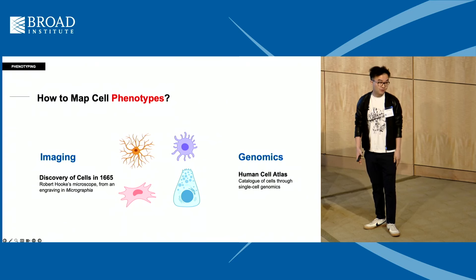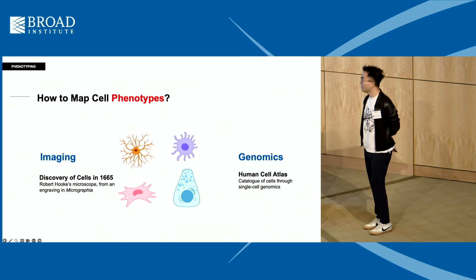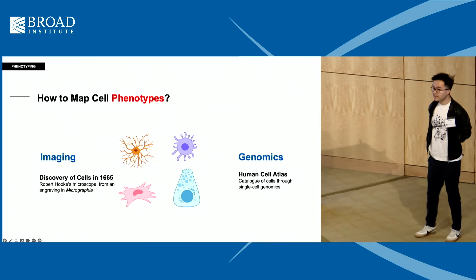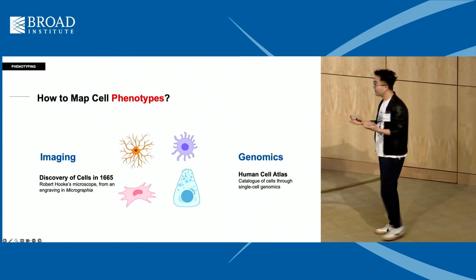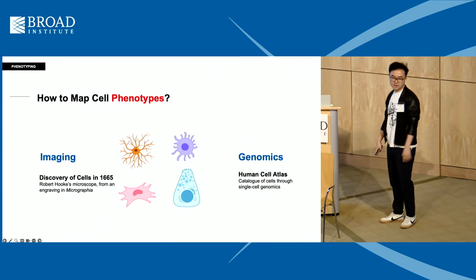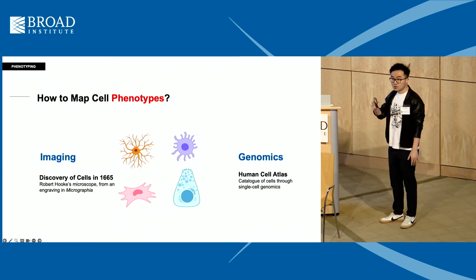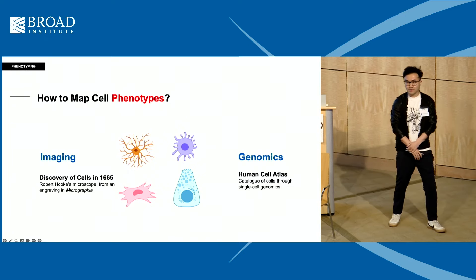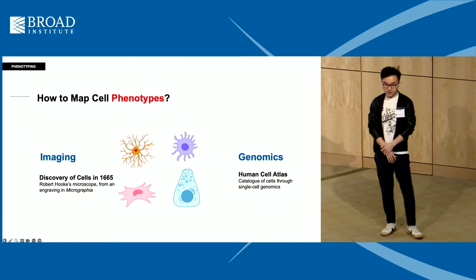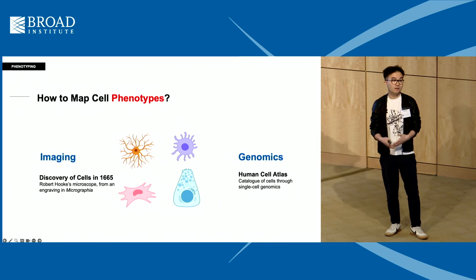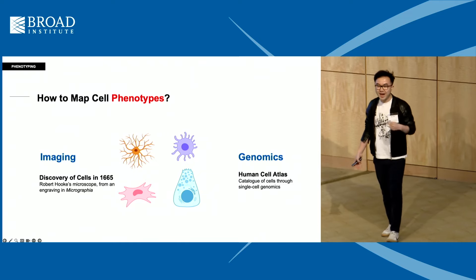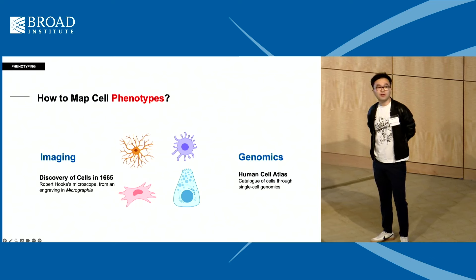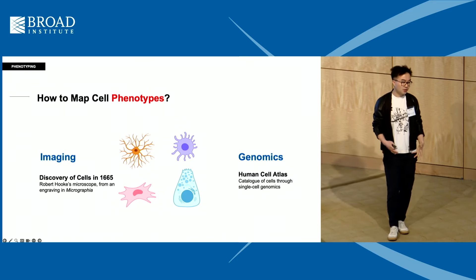Cells were originally discovered and defined through microscopy by Robert Hooke in 1665. Single-cell sequencing is super cool but still very expensive, and a fundamental limitation is that it's destructive—once you sequence the cells, you won't have the same cells again. You can't do this in vivo or in humans; I can't imagine getting single-cell RNA-seq from the brain every day. That's why we started thinking about imaging as a complementary measurement.